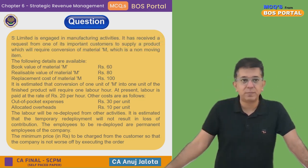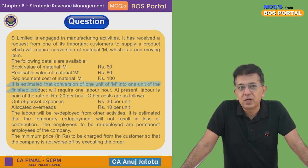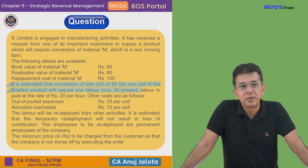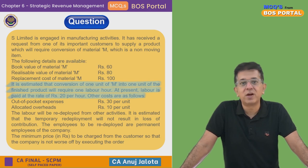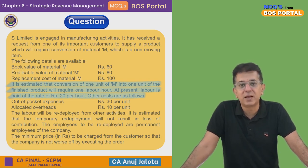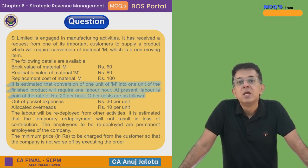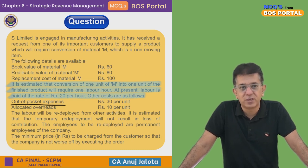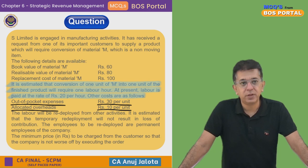It is estimated that conversion of one unit of M into one unit of the finished product will require one hour of labor. Labor is currently paid at ₹20 per hour, so for one unit of the product, one labor hour is required at ₹20. Other costs are as follows: out-of-pocket expenses ₹30, and allocated overheads ₹10 per unit.